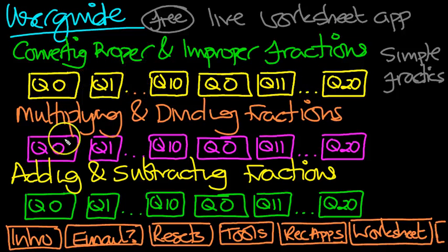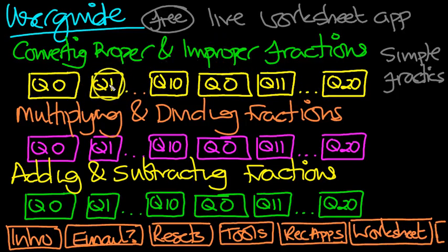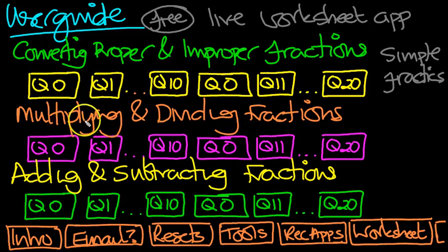There are 20 questions in each of three rows, giving 60 problems in total. There are a few little intros before groups of questions. The content covers equivalent fractions, converting between proper and improper fractions both ways, and then multiplying and dividing fractions — the first 10 questions on multiplying, the next on dividing.